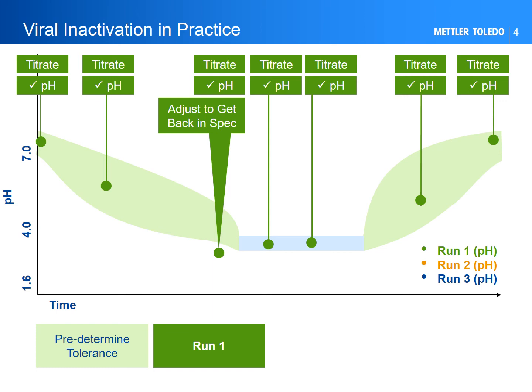Once at the target, the pH is held for a time-based inactivation of viral particles and then eventually reverse titrated back to a physiological or operational pH. Along the way, pH overshoot is to be avoided at all times. However, if overshoot occurs, some processes allow pH correction with a reciprocal base to return within operational tolerances.